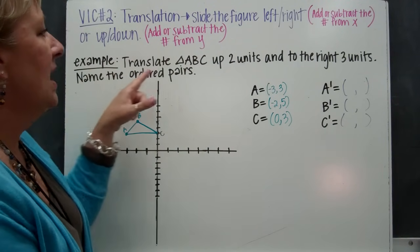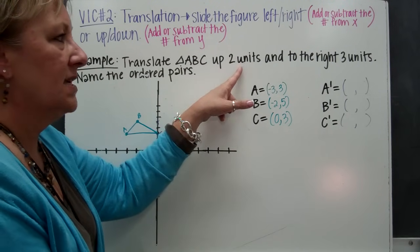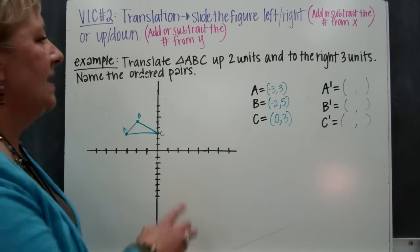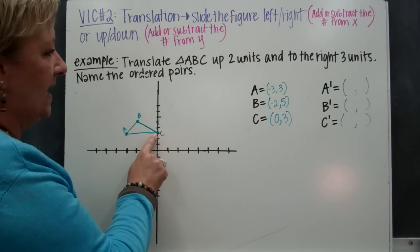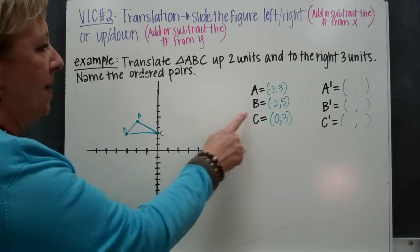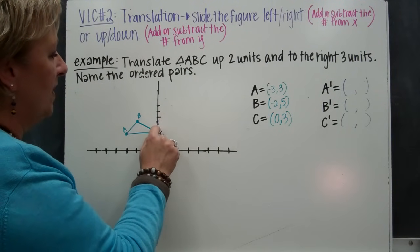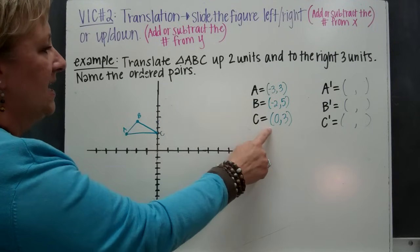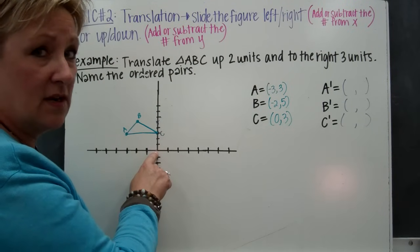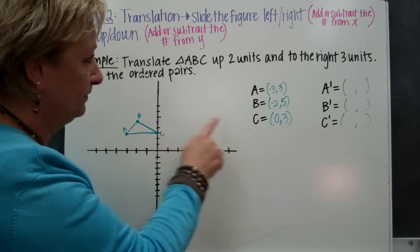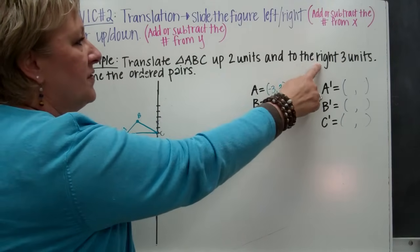For example, if I translate triangle ABC up two units and to the right three units, I've got to name the ordered pairs. I already know that A is at (negative three, negative two); B is at (negative two, five); and C is at (zero, three). So if I want to change it by going up two and over to the right three...